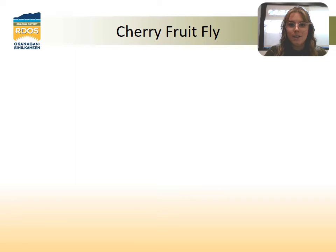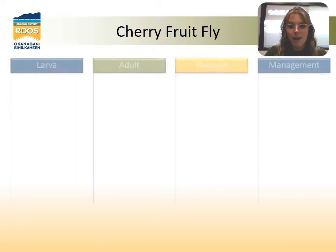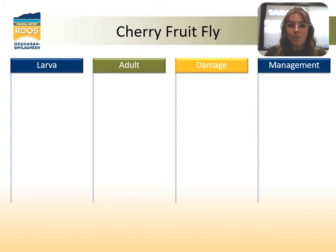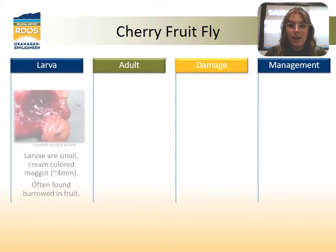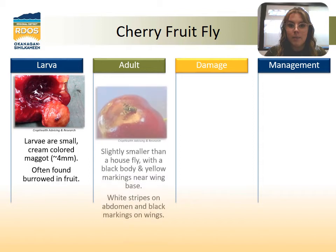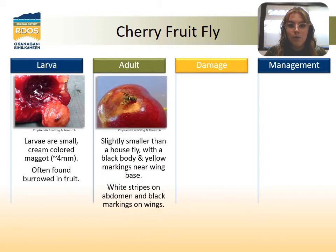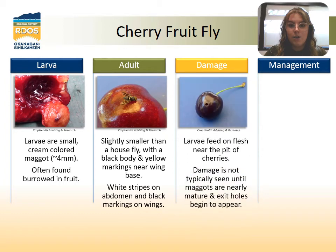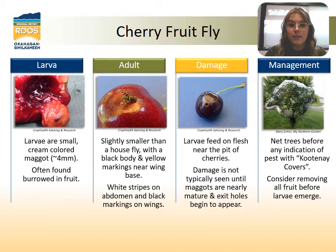Next is the cherry fruit fly. This is similar to the spotted-wing drosophila with identical looking larvae, but the adult is characterized by white stripes on the abdomen and black markings on the wing. Damage is very similar to the spotted-wing drosophila, with damage not typically seen until larvae exit the fruit and damaged holes are sometimes visible. Management is also similar, where netting the tree with specially designed small mesh nets such as Kootenai covers will help. Another method to avoid these two pests is to remove all the fruit before the larvae emerge out of the exit holes to overwinter. It should be noted that the cherry fruit fly and the spotted-wing drosophila are often confused, but a distinct difference is when they are active. The cherry fruit fly is annual, with most of its activity occurring in summer months. However, the spotted-wing drosophila is continuous with multiple active generations and can be found at most times of the year.